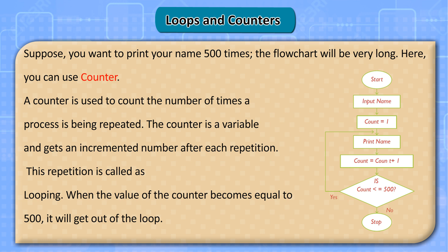Loops and counters: Suppose you want to print your name 500 times — the flowchart would be very long. Here you can use a counter. A counter is used to count the number of times a process is being repeated; it is a variable that gets an incremented number after each repetition. This repetition is called looping. When the value of the counter becomes equal to 500, it will exit the loop. Flowchart: start → input name → count = 1 → print name → count = count + 1 → is count ≤ 500? Yes: loop back; No: stop.